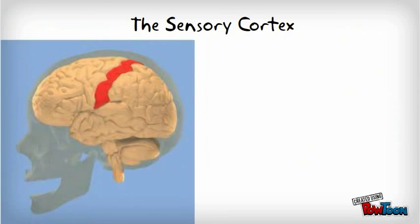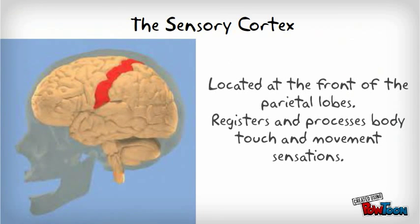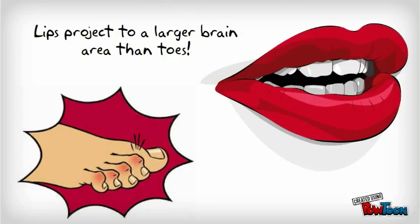The sensory cortex is located at the front of the parietal lobes and registers and processes body touch and movement sensations. The more sensitive the body region, the larger the sensory cortex area devoted to it. For example, your lips project to a larger brain area than your toes.